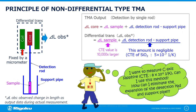The non-differential type TMA, or generally termed as single rod TMA, is suitable for polymers or materials with large thermal expansion. In this system, when heated, the support pipe, the detection rod, and the sample length change. Therefore, the output data or delta L observed will be equivalent to the change in length of the sample, the detection rod, and the support pipe. Since the CTE value of polymers is 10,000 times larger than the expansion of the detection rod and support pipe, the CTE value of the detection rod and the support pipe becomes negligible.